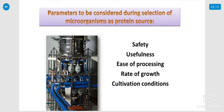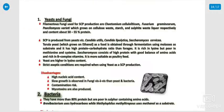The parameters to be considered during the selection of microorganisms as protein sources are: safety, usefulness, ease of processing, rate of growth, and cultivation conditions.